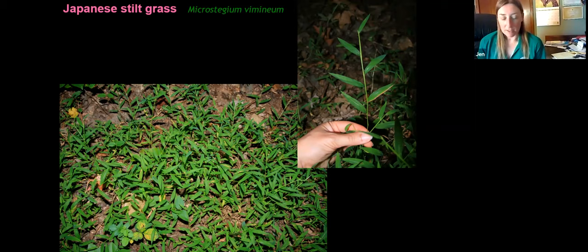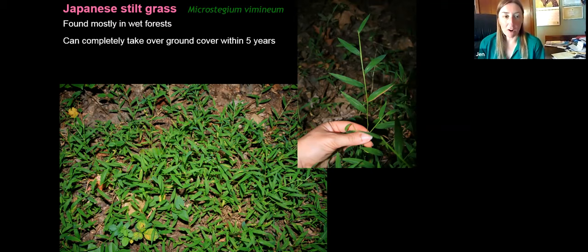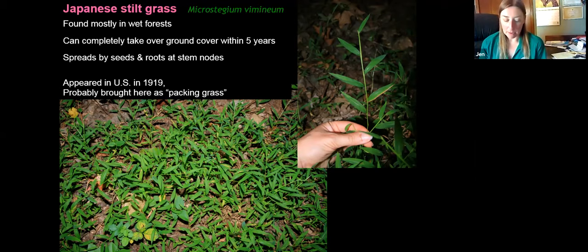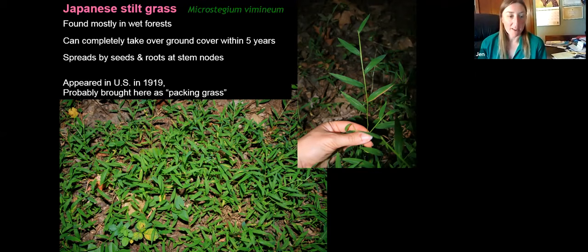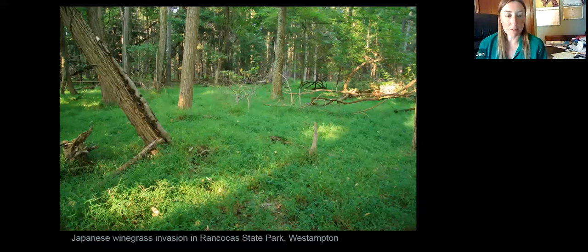Japanese stiltgrass, also called wire grass, is a grass that completely covers the ground. It spreads by both seeds and it also roots at the stem nodes that touch the ground. It's found pretty much in wet forests and can completely take over the ground cover within five years. It first appeared here in 1919, probably as packing material for oriental porcelain. It's critical to try to stop Japanese stiltgrass from going to seed in September — mowing can be effective but has to be done at the right time, just before flowering to avoid reseeding. If that's not done, it can quickly take over the entire ground cover in the forest, as is the case in Rancocas State Park.